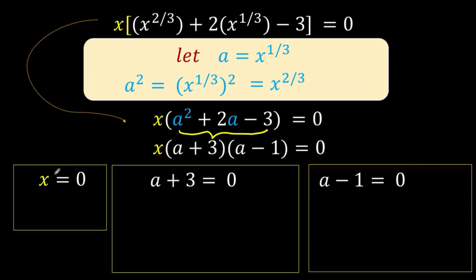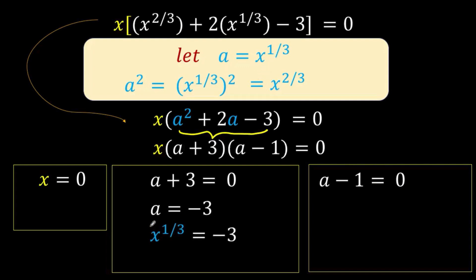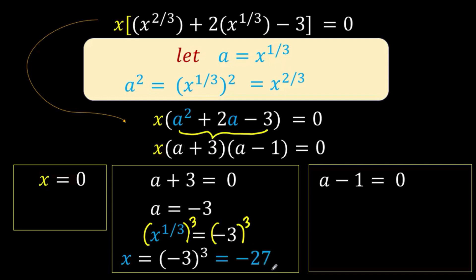At the leftmost part, we already have our solution x equals 0. But the second and third are still expressed in terms of the dummy variable a, so we need to go back to our substitution and replace a with x raised to 1 third. Subtracting 3 from both sides of a plus 3 equals 0 gives a equals negative 3. Replacing a with x raised to 1 third and raising both sides to the third power, the left side simplifies to x, and negative 3 cubed equals negative 27. So our second value is x equals negative 27.